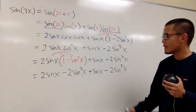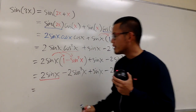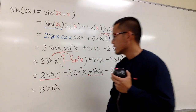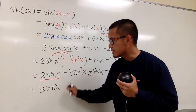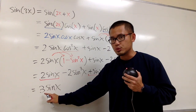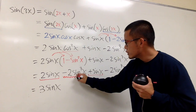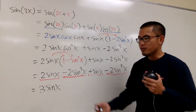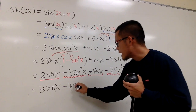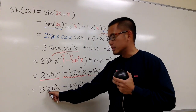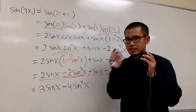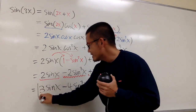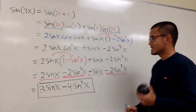Now we combine like terms. We have 2 sine x and we're adding one more sine x, so together that gives 3 sine x. Then we have minus 2 sine cubed x and minus 2 sine cubed x; minus 2 minus 2 is minus 4, so we get minus 4 sine cubed x. We have sine x here and sine cubed x — all in terms of sine x. We wrote sine of 3x in terms of sine x, and this is the identity for sine of 3x.